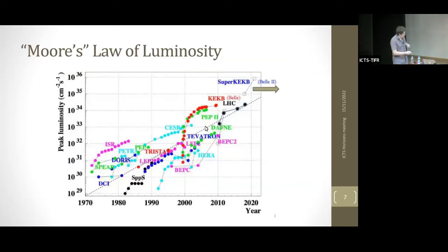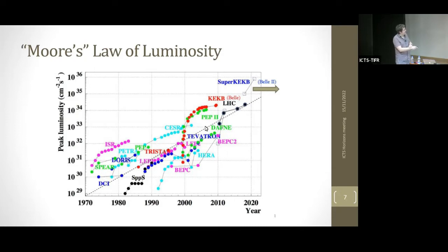The question is how we achieve this, and the answer is very high instantaneous luminosity. This plot shows various colliders over half a century where you see instantaneous luminosity rising. KEKB was the world leader for a long time, and the projection for SuperKEKB aims to push luminosity to well above 10³⁵ — the target is 6×10³⁵ cm⁻²s⁻¹. Currently our record is 4×10³⁴ cm⁻²s⁻¹.